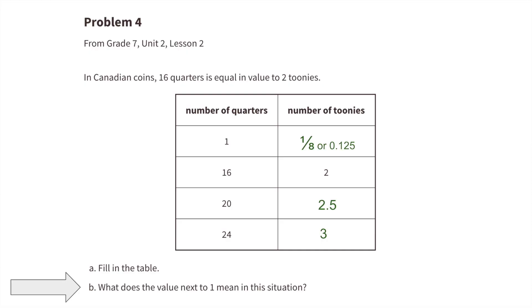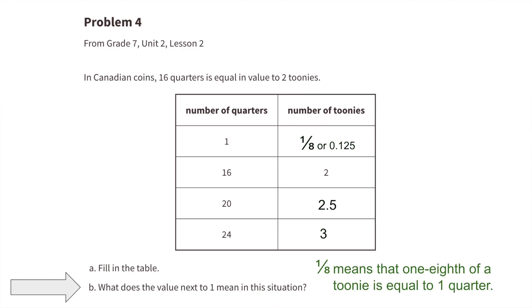Part b: what does the value next to one mean in this situation? One-eighth means that one-eighth of a toonie is equal in value to one quarter.